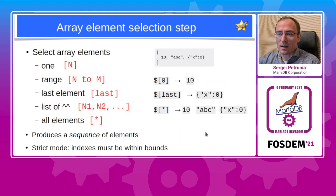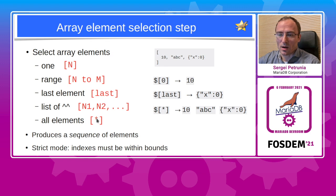The second kind of step is the array element selection step. If the context is an array, you can select one or several elements from it. You can use a number — the numbers are zero-based, so element number zero gives the first element. You can specify a range, use the word 'last' to specify the last element, or use a comma-separated list of any of the above. Or you can specify all elements using star, which produces a sequence of all elements. Strict mode requires that indexes are within bounds, otherwise it's an error; with lax mode there is no such restriction.